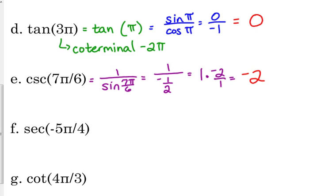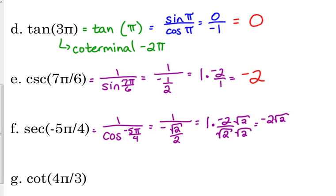Secant of negative 5π over 4. Secant is the reciprocal of cosine. Over 4 angles are easy. They're always square root 2 over 2. I just got to figure out what quadrant I'm in. So negative 5 over 4 would put me in the second quadrant. So my x's or my cosines are negative. So I've got 1 times, flip the bottom one over, and then rationalize. So if that negative 2 square root of 2 over 2, those 2's cancel. So that is equal to the negative square root of 2.